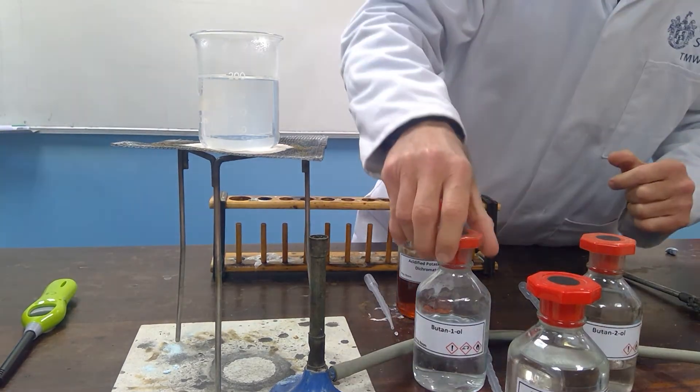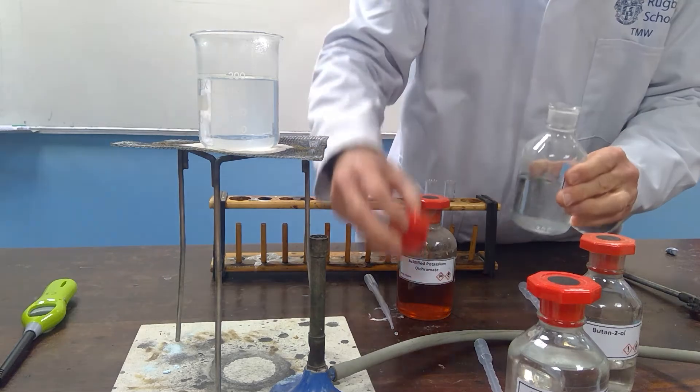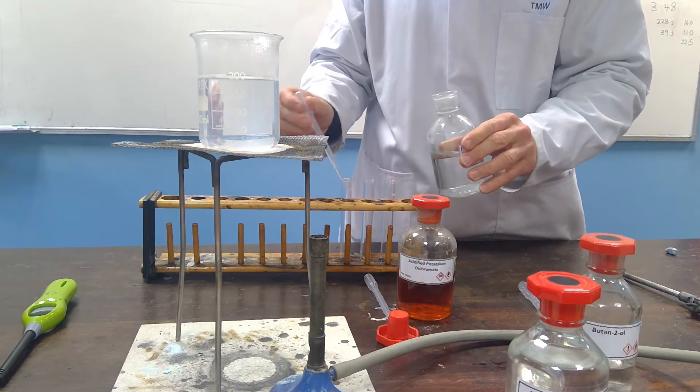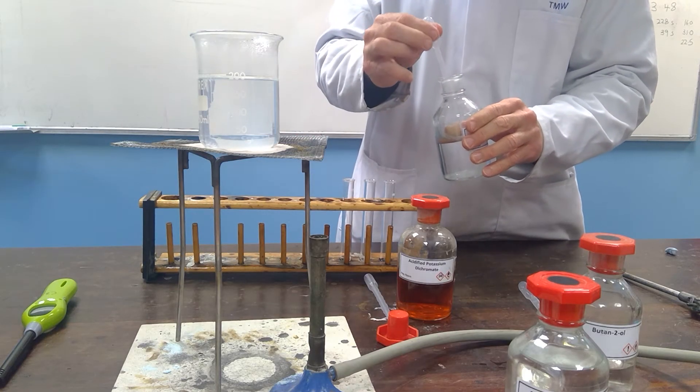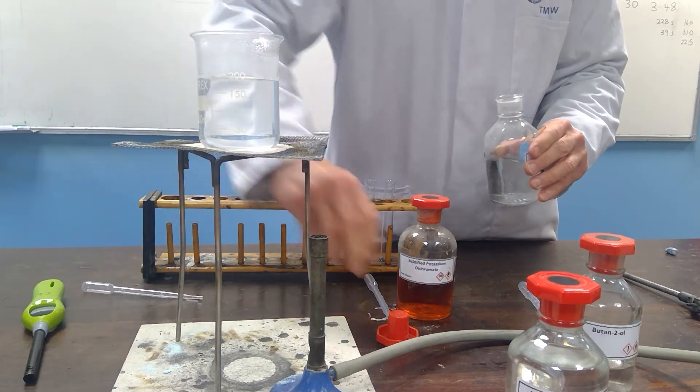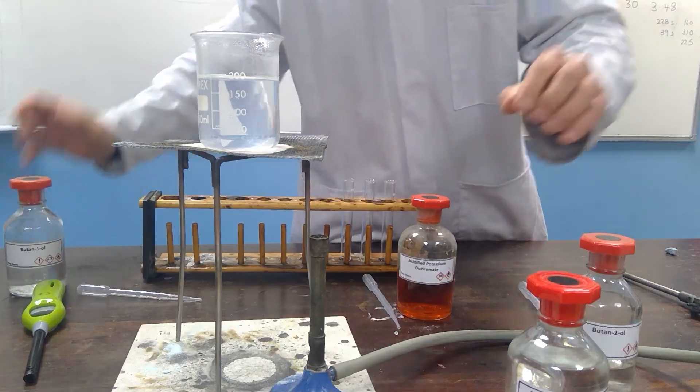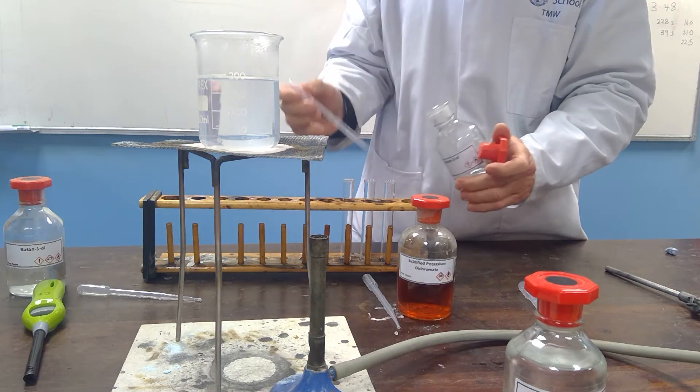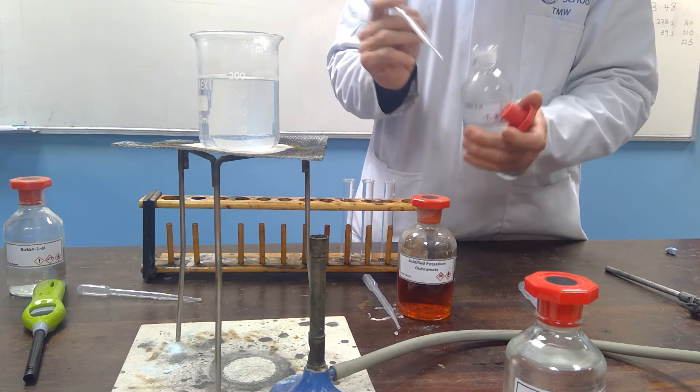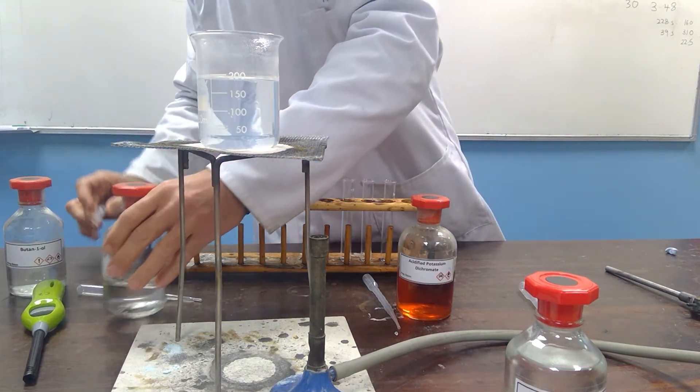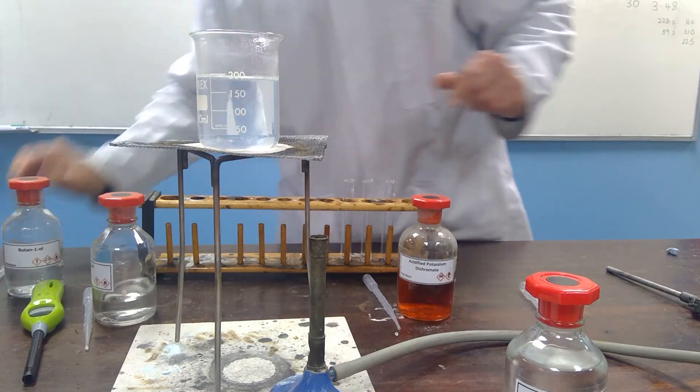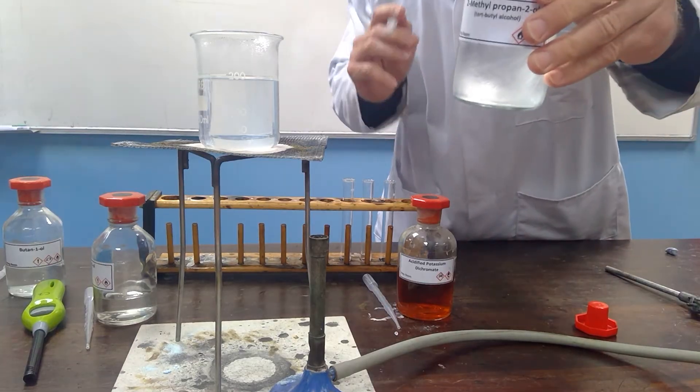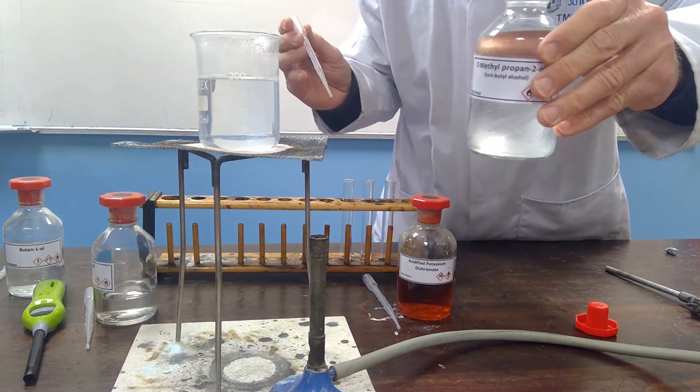So we'll first add a small quantity of the butan-1-ol to a test tube. So the first one butan-1-ol, then in the second test tube some butan-2-ol and into the third test tube some 2-methyl propan-2-ol, which you'll notice is just starting to solidify on this cold day in the laboratory.